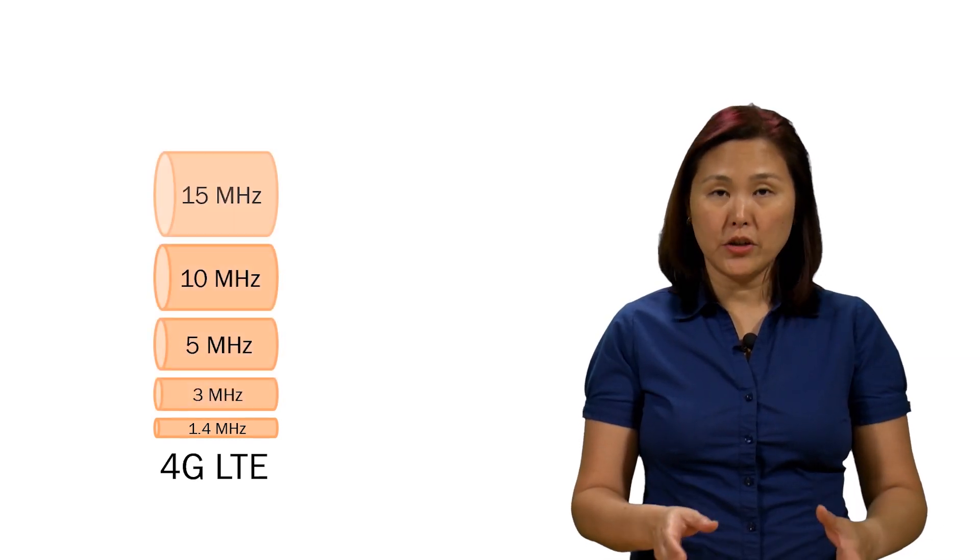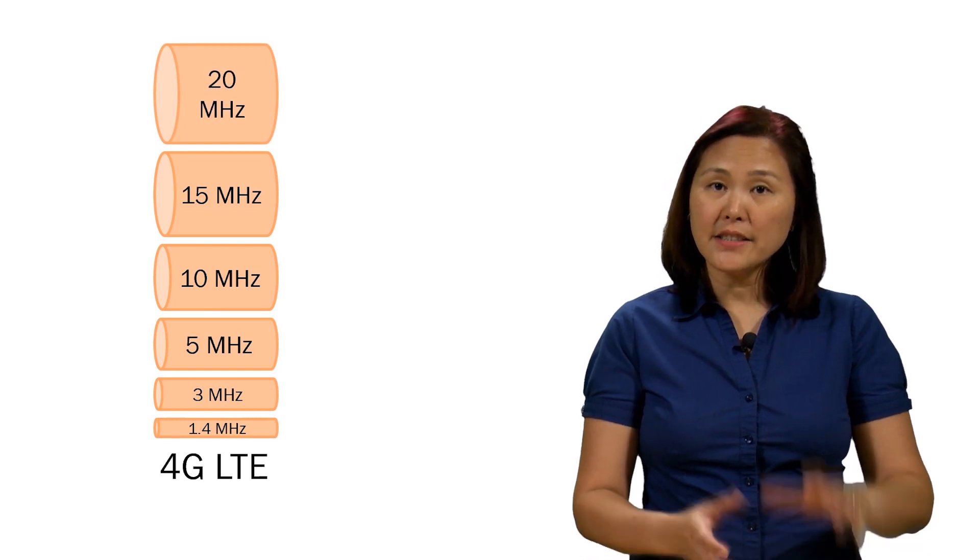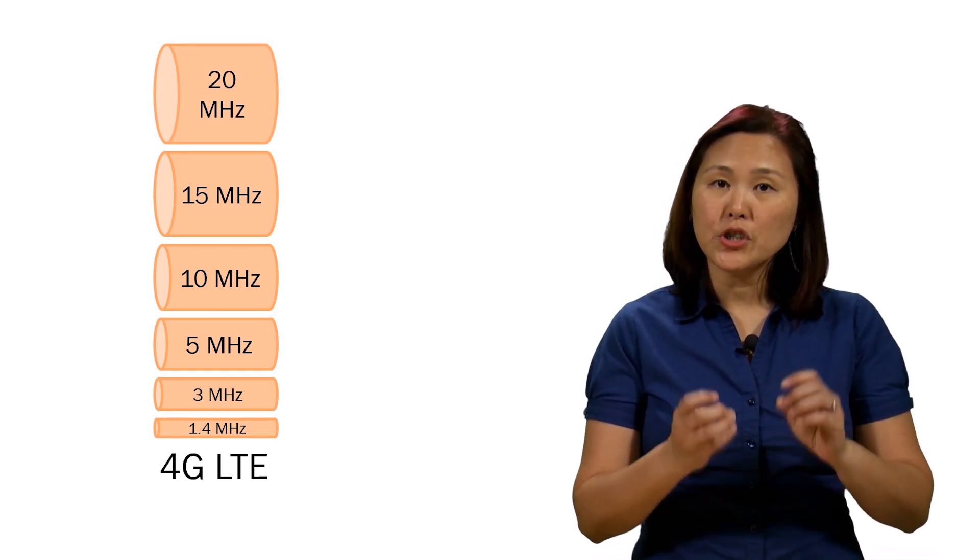In 4G, the channels are like pipes. The pipe can range from a 1.4 MHz wide bandwidth channel up to a 20 MHz channel. The size of the pipe determines how much data can flow through.